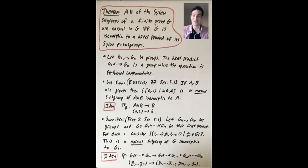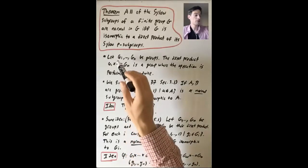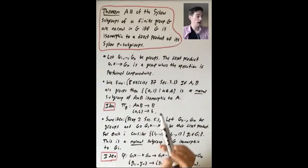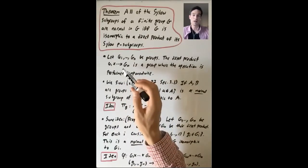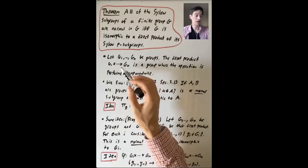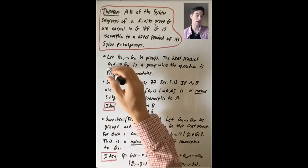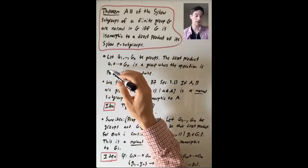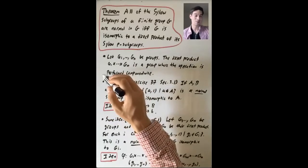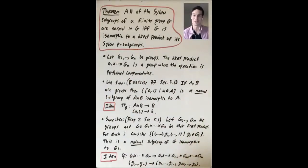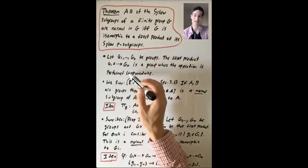What is a direct product? We've already been talking about direct products throughout the course, but let me set notation. Let G1 through Gn be groups. The direct product of these groups is also a group, and the group operation is done component-wise inside each individual group. So if you have elements (a1, a2, …, an) and (b1, b2, …, bn), the operation gives you (a1·b1 in G1, a2·b2 in G2, …, an·bn in Gn).